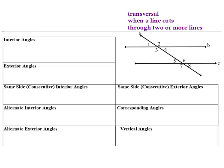One vocab word to start with is transversal. A transversal is when a line cuts through two or more lines. I have lines B and C here, and line A would be considered the transversal because it's the one cutting through the two lines. We're going to talk about the different types of angles produced when we have a figure like this.